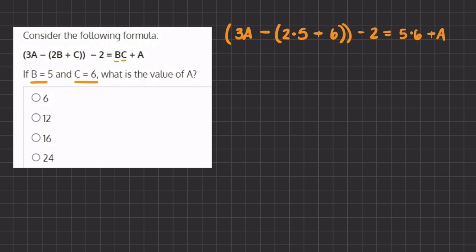So now we can start and simplify. Here we have 3a minus, here we have 2 times 5 which is 10 plus 6 which gives us 16. So we have a negative 16 minus 2 equals 5 times 6 which is 30 plus a.